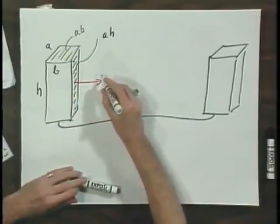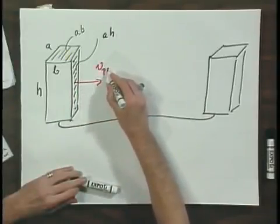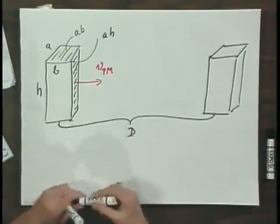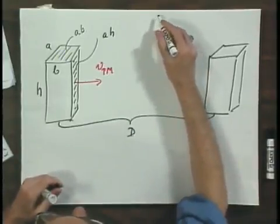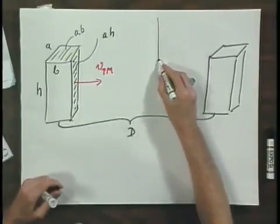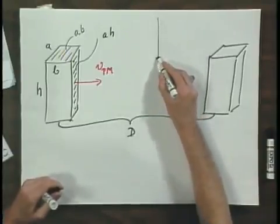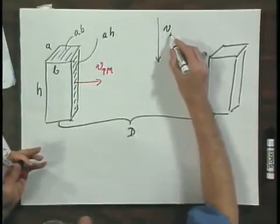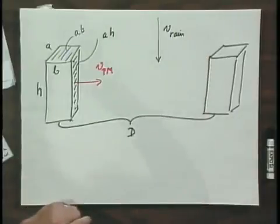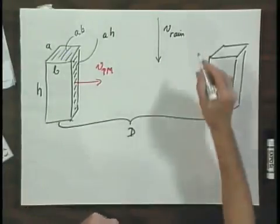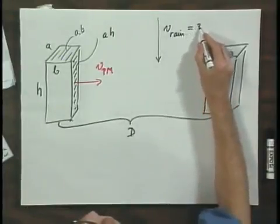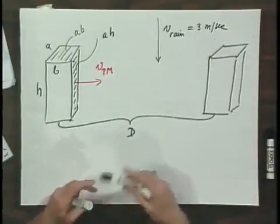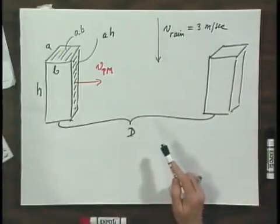Their velocity equals V, for both Peter and Miri. We will assume that the rain is falling down exactly vertically, hitting the street exactly vertically, and we will give it the name V rain, or V of R. For practical purposes, you may later substitute 3 meters per second, but it's not so important right at the start.